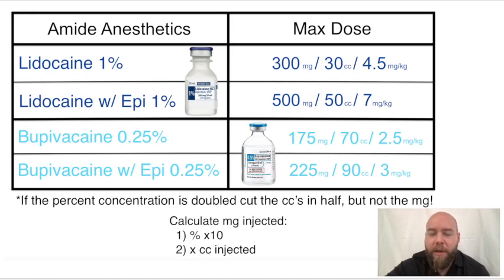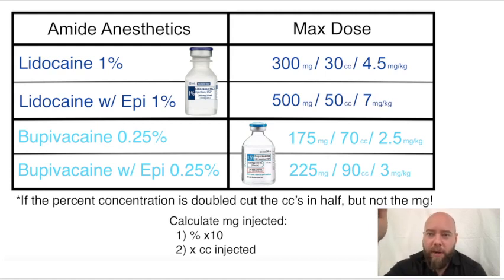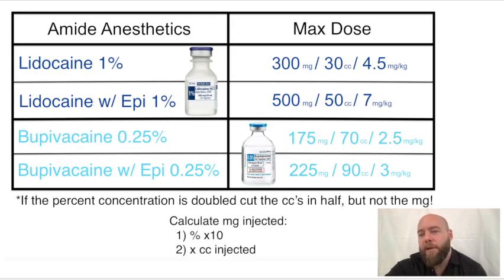So again, memorize: lidocaine 1%, lidocaine with epi 1%, and the same for bupivacaine. Repeat over and over: 330, 550, 175, 70, 225, 90. Memorize that in your head. Then, once you master that, move on to the milligrams per kilogram: 4.5, 7, 2.5, 3.